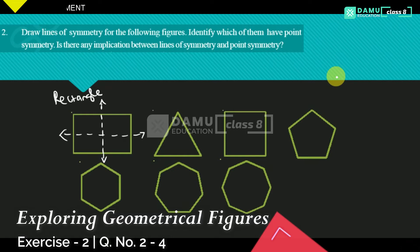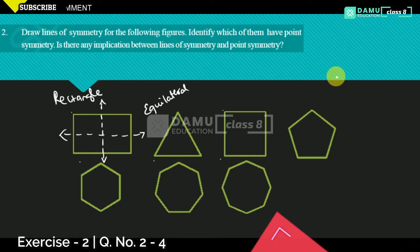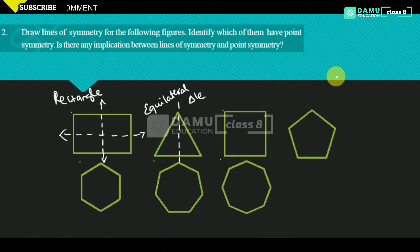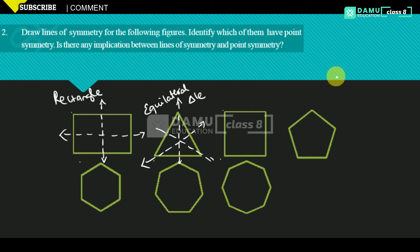This is an equilateral triangle. An equilateral triangle will have three lines of symmetry. If it is equilateral, that many lines of symmetry. So, how many number of sides? Three. So, three sides means three lines of symmetry.